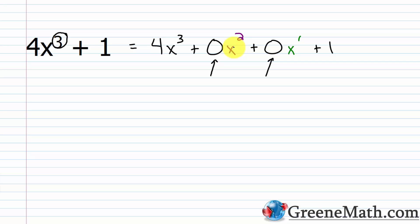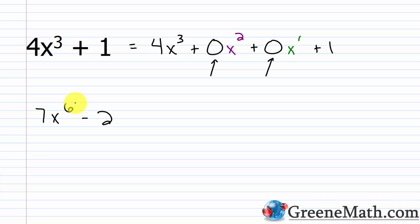The basic idea is: when performing long division with polynomials with missing terms, we need to use 0 as the coefficient for each missing term. If something's written in standard form, it's very easy to see what's missing. If I have 4x cubed plus 1, I know I'm missing x squared and x to the first power. If I had something like 7x to the sixth power minus 2, my highest power is the sixth power, so I'm missing x to the fifth, fourth, third, second, and first power — five missing powers. You'll probably just get one or two.